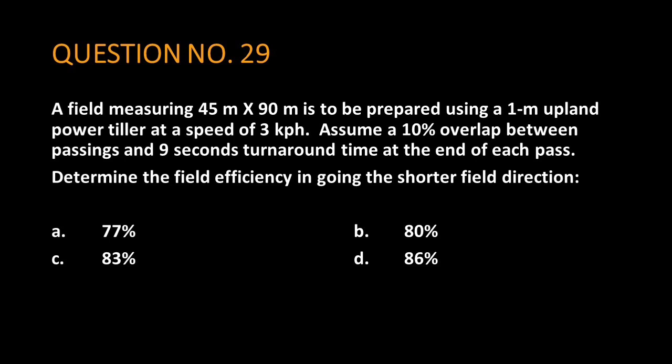Assume a 10% overlap between passings and 9 seconds turnaround time at the end of each pass. Determine the field efficiency in going the shorter field direction.